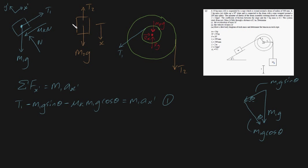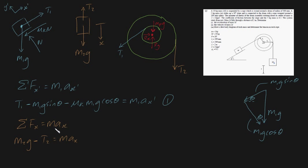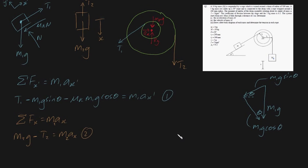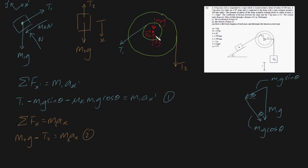Now let's analyze our second free-body diagram. The sum of forces in the x direction equals m2 times ax. Since x is defined to be downwards, we have m2g minus T2 equals m2 ax. That is equation 2.